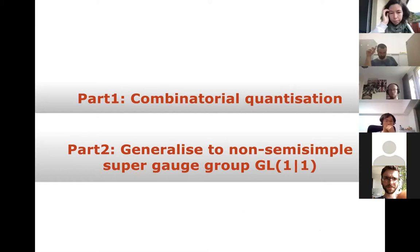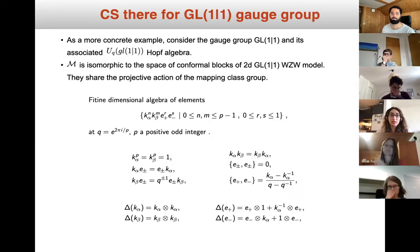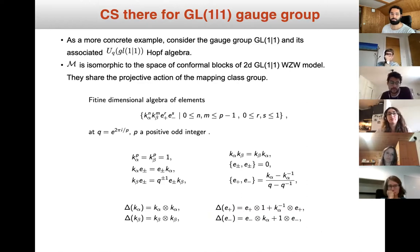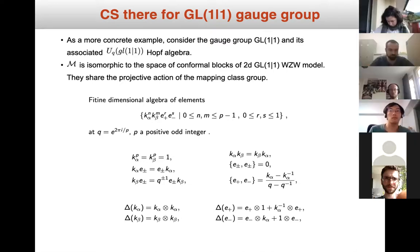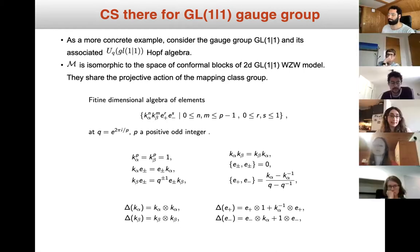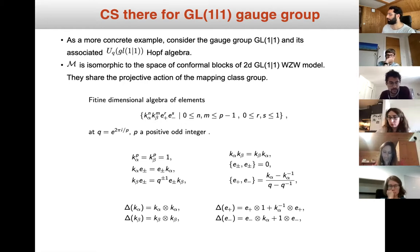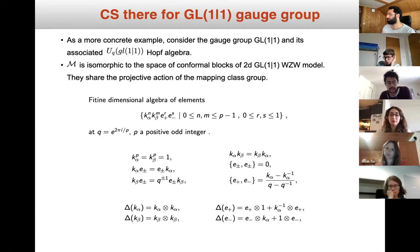In the last few minutes, let me tell you about our work and how we generalized to the non-semi-simple super group. We started with GL(1|1) as the first super group because it's the simplest one to start with. This group has four generators: K_α, K_β, E₊, and E₋, where E₊ and E₋ are odd variables. They have the given relations, and I wrote as an example the co-product relations of K_α, K_β, E₊, and E₋. They are graded, so the tensor product also involves Grassmann variables, which introduces extra signs from the grading.